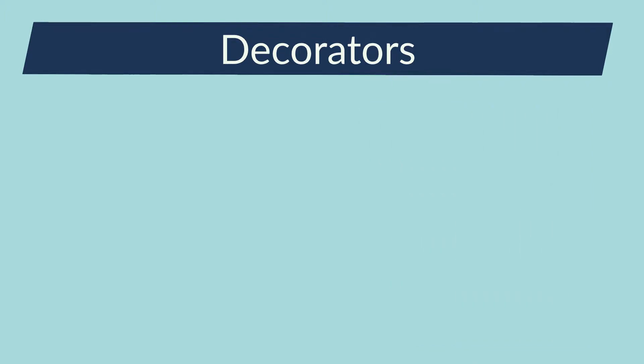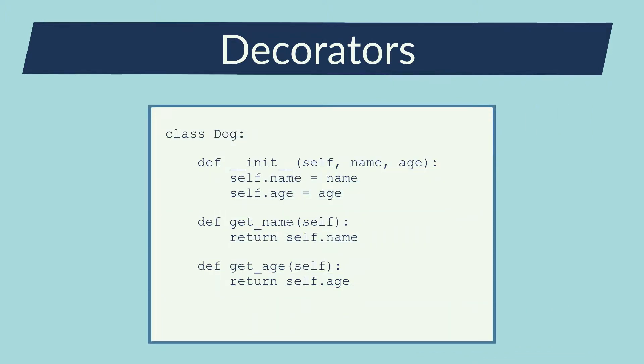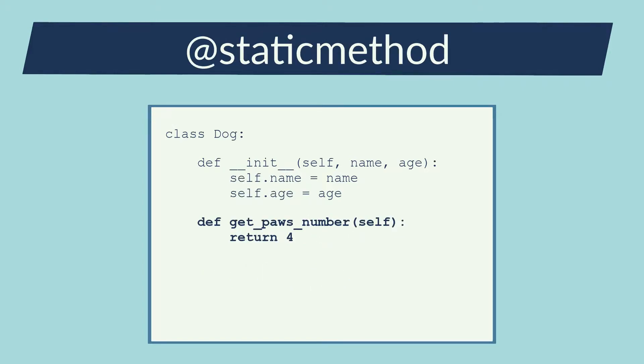Let's see the first example. In object-oriented programming, the methods inside a class always have the self-input parameter. The self-parameter allows me to access the instance values of the object. Let's decorate this method with static method. This decorator allows me to not have the self-input parameter. The decorator modified the method. As this method doesn't need to read information from the instance object, I can declare it as static method.